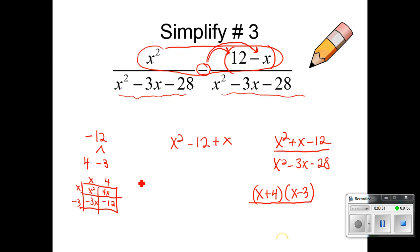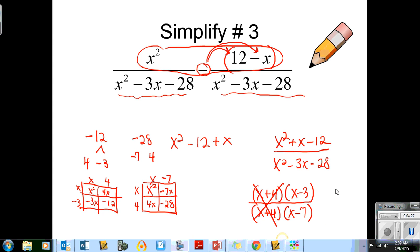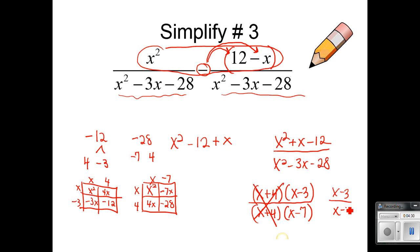And the bottom would become two factors of 28 that make 3. That would be negative 7 and positive 4. And then if I put those in my squares, I would have x squared minus 7x plus 4x minus 28. Factoring out common terms, I would get x plus 4, x minus 7. My x plus 4's would cancel. And I would be left with x minus 3 all over x minus 7.